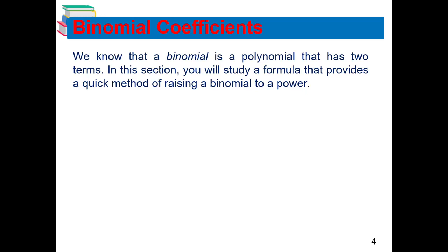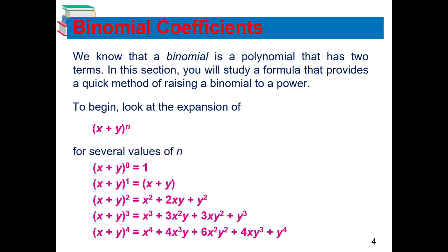This formula provides a quick method for raising a polynomial to a power. We look at the expansion of (x + y) raised to n for several values of n: raised to 0, 1, 2, 3, and 4. For example, (x + y)⁰ = 1; (x + y)¹ = x + y; (x + y)² = x² + 2xy + y²; and (x + y)⁴ = x⁴ + 4x³y + 6x²y² + 4xy³ + y⁴.